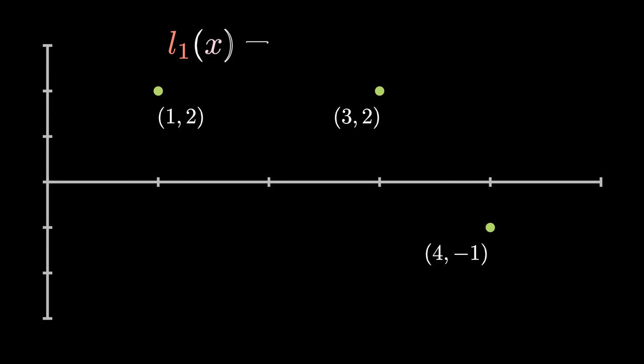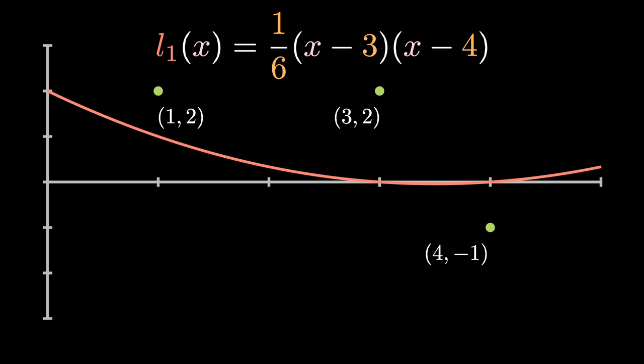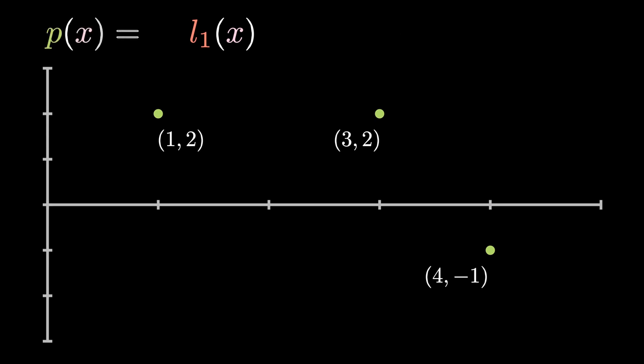Let's try and construct the first Lagrange polynomial, which we can denote with l_1(x). First, we can set the zeros to be the other x coordinates, giving us (x - 3) times (x - 4). To make it equal one at x is equal to one, we first plug in x is equal to one, giving us negative six. Then dividing the polynomial by this number, this gives us the first Lagrange polynomial: one sixth times (x - 3) times (x - 4). Doing this for all the other points, we get three Lagrange polynomials.